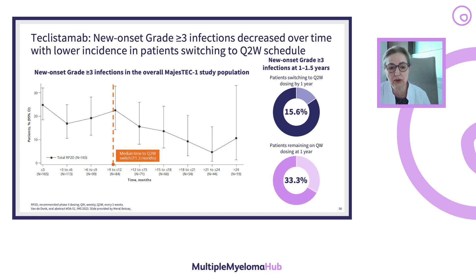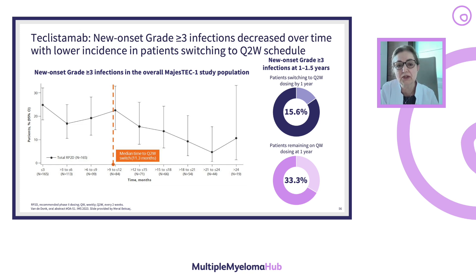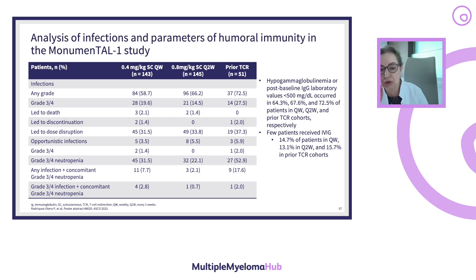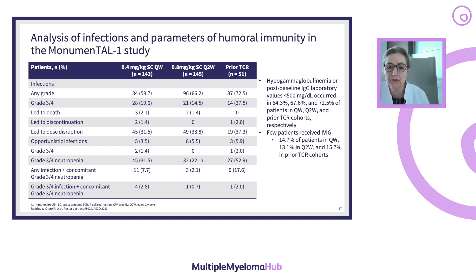In the next slide, we see humoral immunity changes in the MonumenTAL-1 study. With Talquetamab, comparing 0.4 mg/kg once weekly versus 0.8 mg/kg every two weeks, the infectious problems are decreasing without a sacrifice in efficacy. This is another approach that can be used for protection.